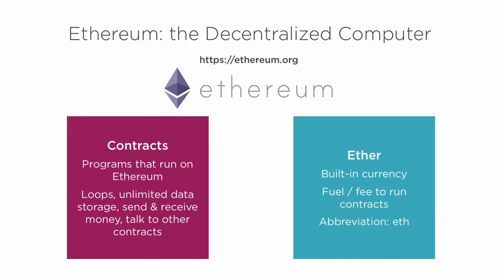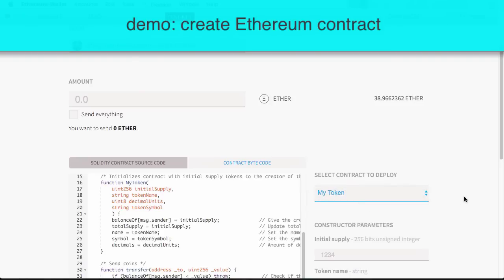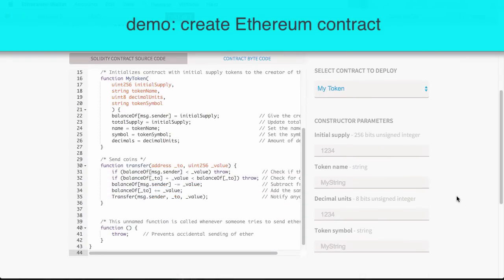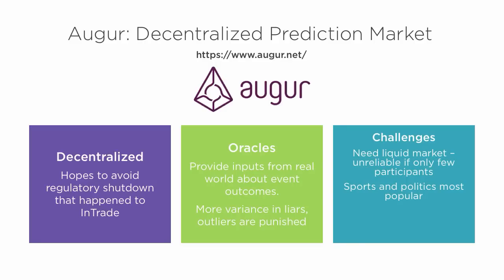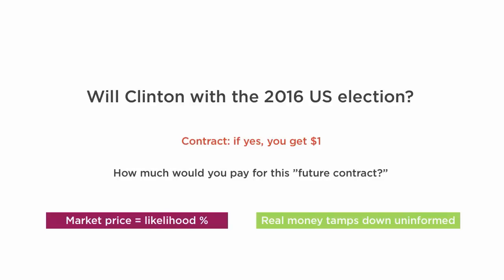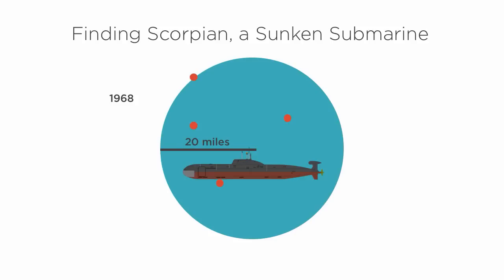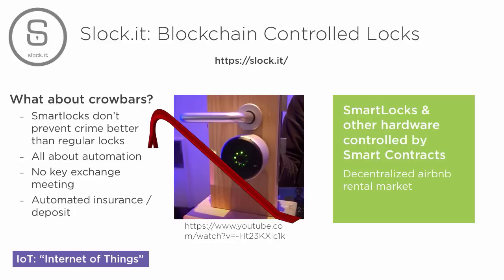Then we dive into Ethereum, the first decentralized and open computer that promises to run unstoppable code, also called smart contracts. I give a demo of how to create and use smart contracts. An amazing number of applications can be built on top of Ethereum, like Augur, a prediction market. Prediction markets attempt to extract the wisdom of the crowd by making people bet on their predictions. Unlike political or sports commentators who lose nothing from poor predictions, prediction markets put participants' skin in the game. Also, IoT, or Internet of Things, is very briefly covered, with Slock.it's smart contract-controlled digital locks.